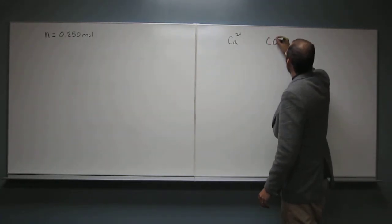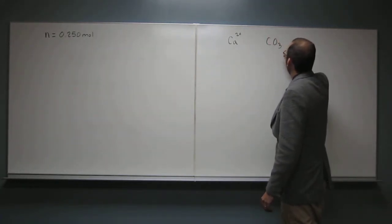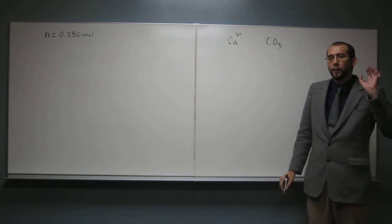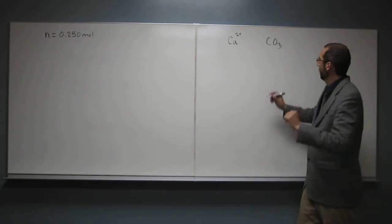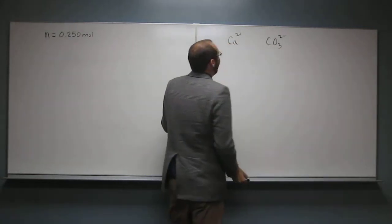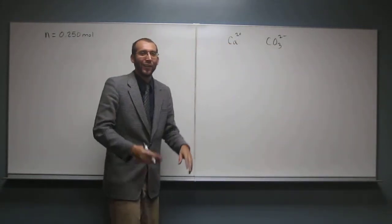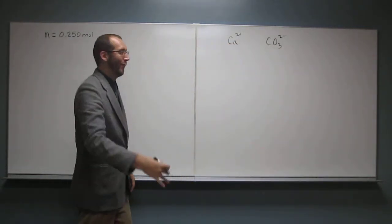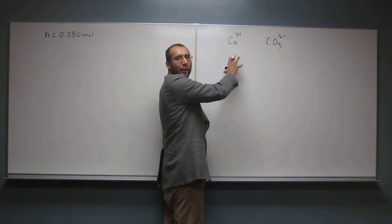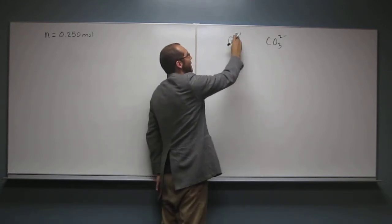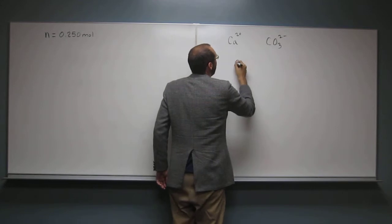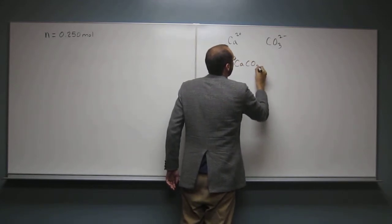What's the charge for carbonate? Negative 2. Negative 2 it is. So when we combine this, these charges are going to cancel out and we just smash that together, right? So CaCO₃.